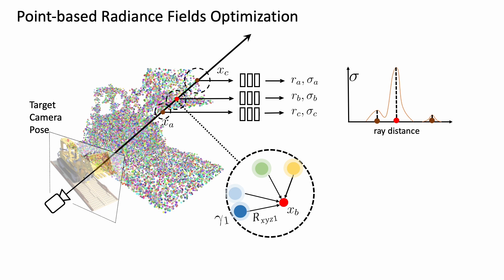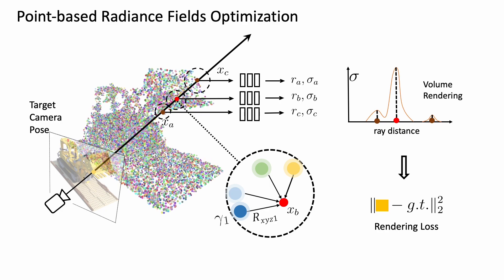After aggregating the radiance along the ray, we can calculate the rendering loss between the generated and the ground truth color on the pixel. The gradients will optimize not only the MLPs, but also the point features.